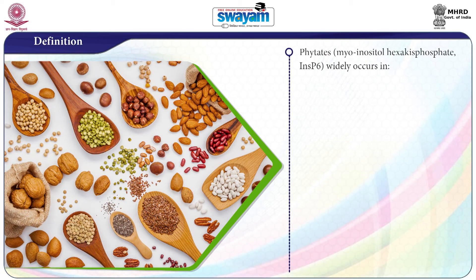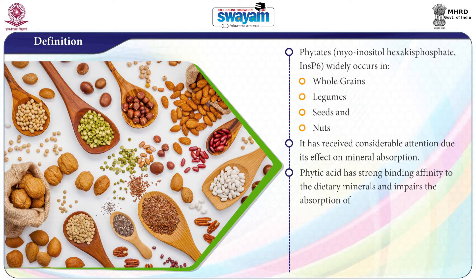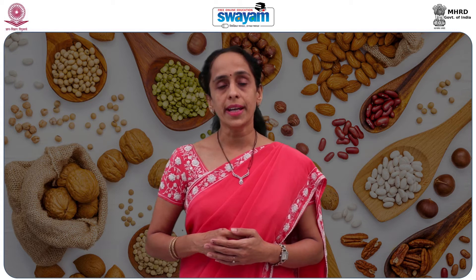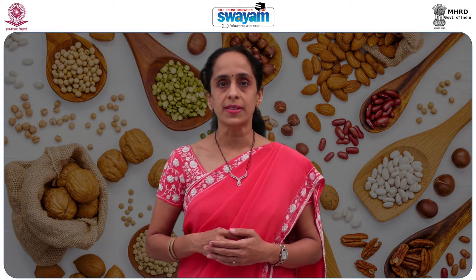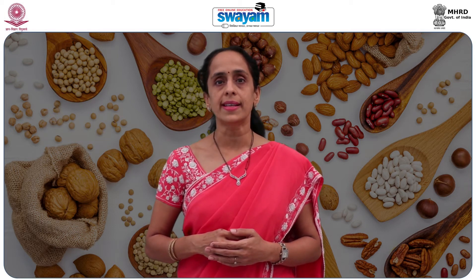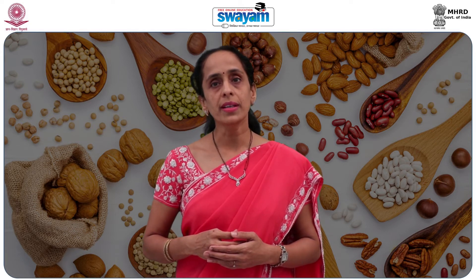Phytates widely occur in whole grains, legumes, seeds and nuts. It has received considerable attention due to its effect on mineral absorption. Phytic acid has strong binding affinity to dietary minerals and impairs the absorption of iron, zinc, manganese and to a lesser extent calcium. The discovery of phytate dates from 1855 to 1856 when Hartig first reported small round particles in various plant seeds, which are similar in size to potato starch grains.